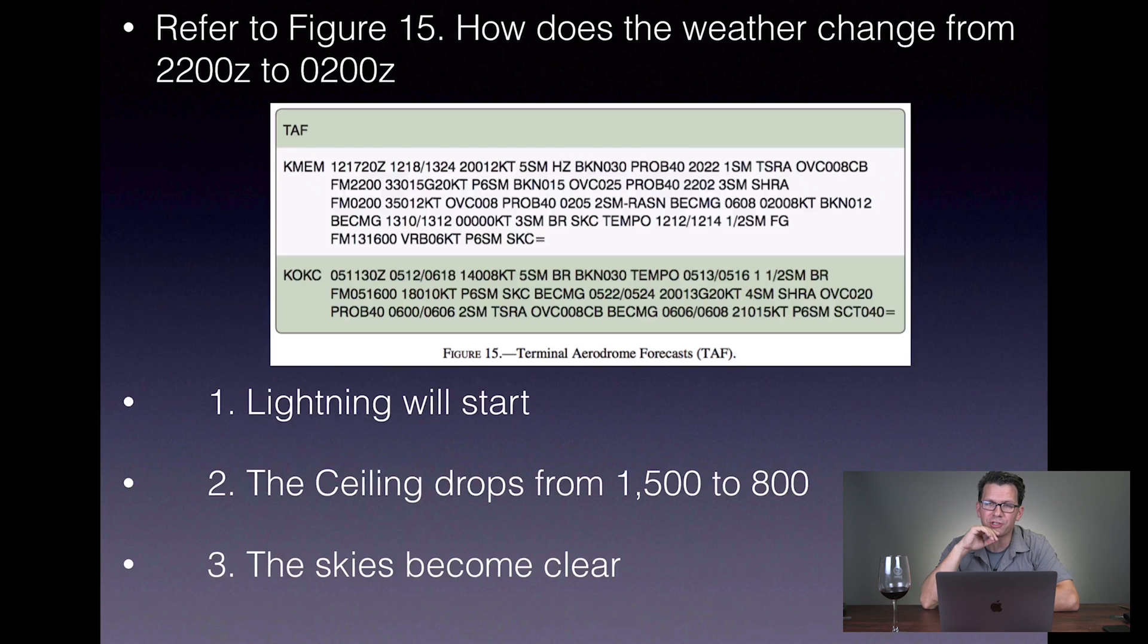So you might see a question, we'll go through the question first. I'll break down the TAF and then we'll find the answer. You will get a question like this on the test with this same TAF. This TAF is actually pulled from the Part 107 testing supplement. So you'll get something that says like refer to figure 15. How does the weather change from 2200 Zulu to 0200 Zulu? Now if you remember back on the METAR, you're not going to get something like this. You're going to get what is the weather at such and such airport.